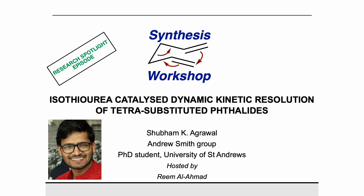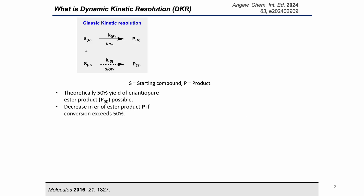I'll be talking about isothiurea-catalyzed dynamic kinetic resolution of tetrasubstituted phthalates. Before delving into the details, I would like to introduce the basics of kinetic resolution and dynamic kinetic resolution. Kinetic resolution involves the different reactivity of enantiomers in a racemic mixture, where one enantiomer reacts faster than the other, ideally yielding 50% of enantiopure product and 50% of enantiopure starting material.